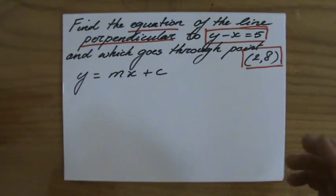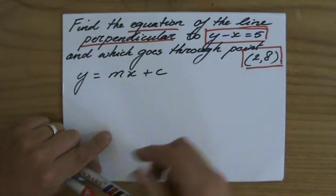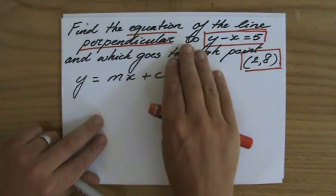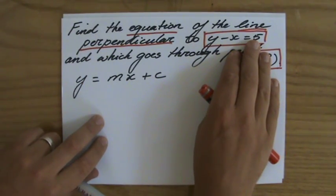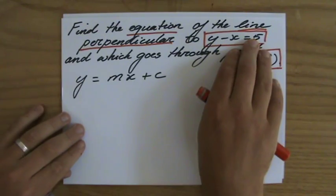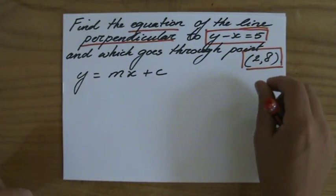So can I calculate the gradient? No I can't. Can I see the gradient by looking at the line? No I can't. But they tell me it has to be perpendicular to y minus x equals 5 and they give me that information for a reason.